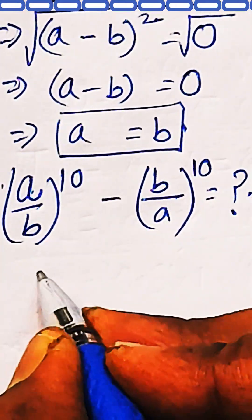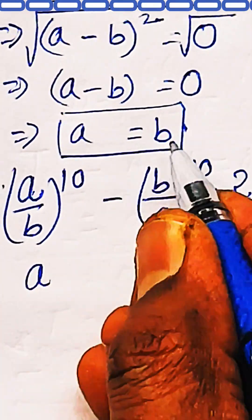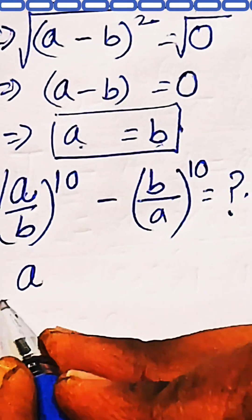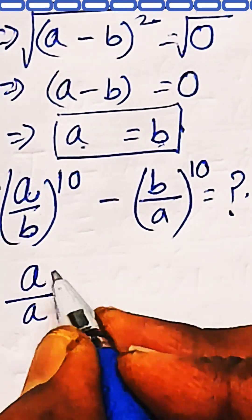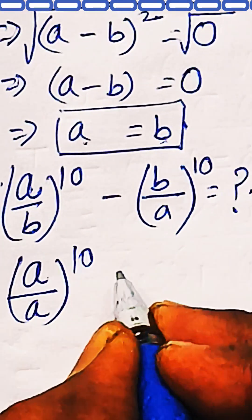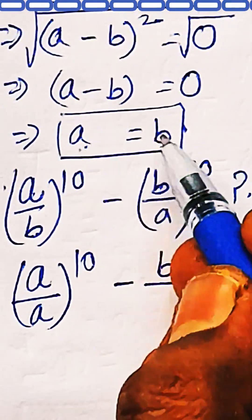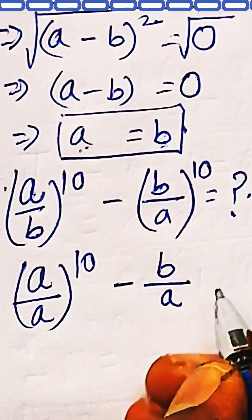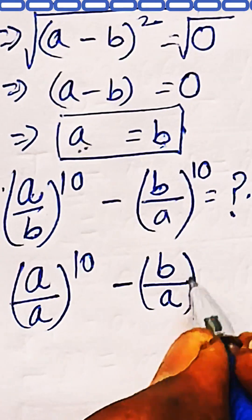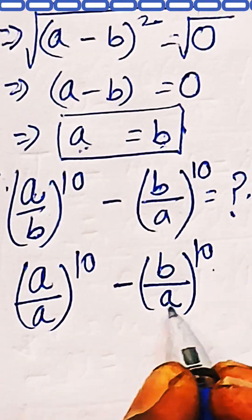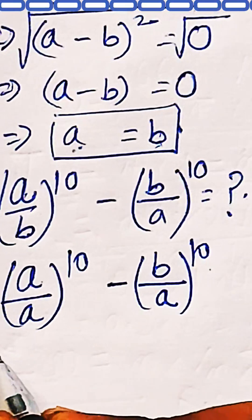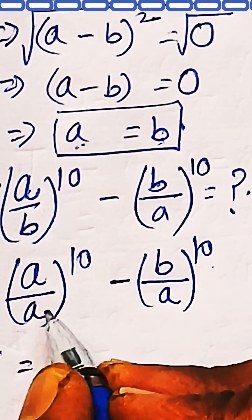Now we need to find the value of (a/b)^10 minus (b/a)^10. Since a equals b, the denominator of the first fraction, b, can be replaced with a. Similarly, in the second fraction b/a, the denominator can be replaced with a.